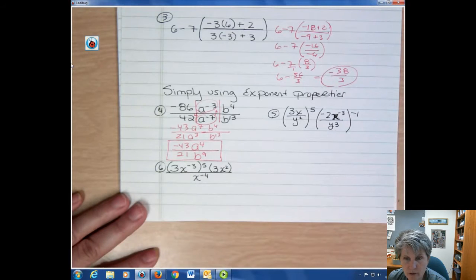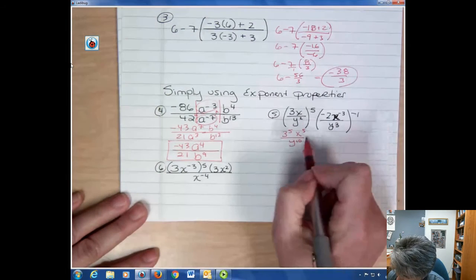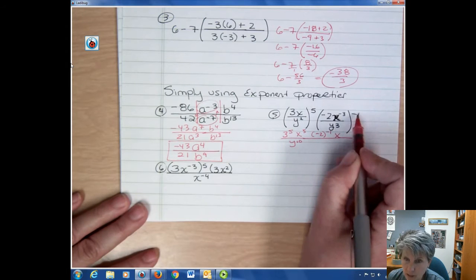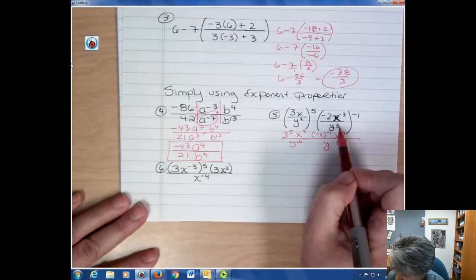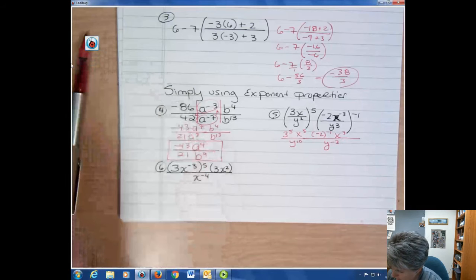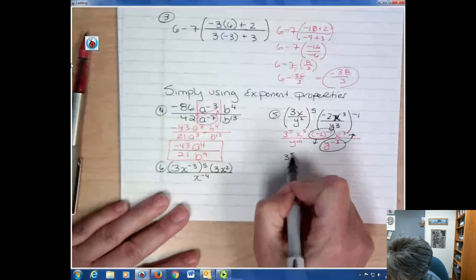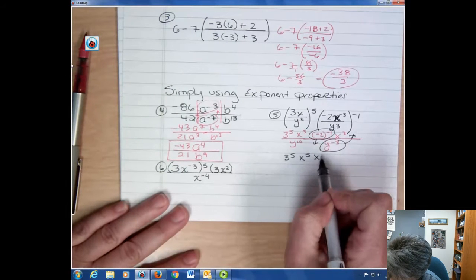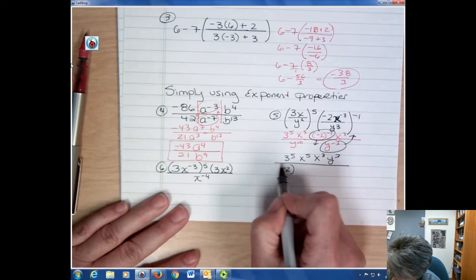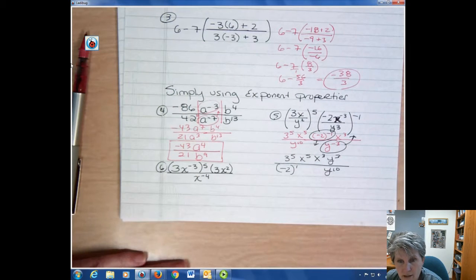For the next one, I'm going to distribute the power to every part of the fraction. I've got 3 to the fifth and x to the fifth and y to the 2 times 5 or y to the tenth. I've got, I'm going to just go ahead and put these together, negative 2 to the negative 1. I've got x to the negative 3 times negative 1, that's positive 3. And I have y to the 3 times negative 1 or negative third. Alright, so negative 2 to the negative 1. Let's do it this way. Anything that's got a negative power needs to move. And so I still have 3 to the fifth on the top. I still have x to the fifth on the top. I still have x to the third on the top. I now have y to the third on the top. I now have negative 2 to the first power, which I don't need to write that, but just so you can see. And I still have y to the tenth on the bottom. So anything that had a positive power, I did not move. Anything that had a negative power, I did.